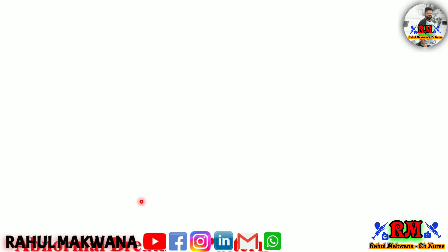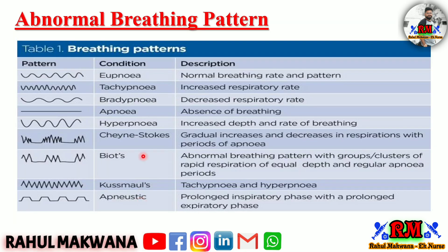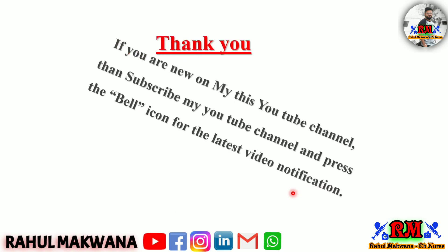In this figure, all the terminologies discussed are shown. Eupnea means normal breathing rate and pattern. Tachypnea means increased respiratory rate. Bradypnea means decreased respiratory rate. Apnea means absence of breathing. Hyperpnea means increased depth and rate of breathing. Cheyne-Stokes respiration is a gradual increase then decrease in respiration with a period of apnea. Biot's respiration is an abnormal breathing pattern with groups or clusters of rapid respirations of equal depth with regular apnea periods. Kussmaul's is tachypnea with hyperpnea.